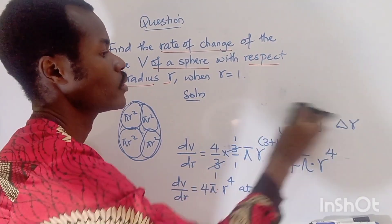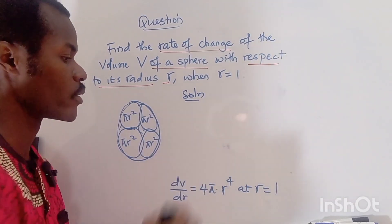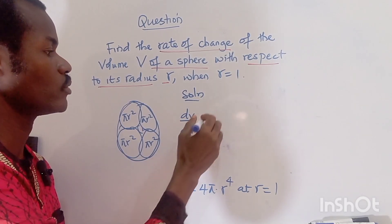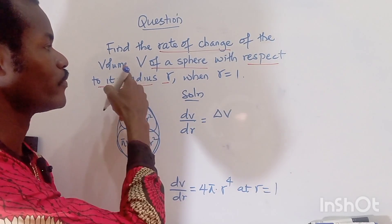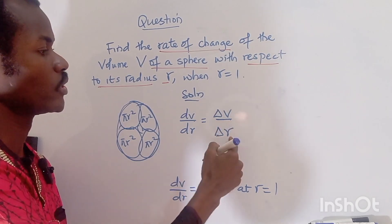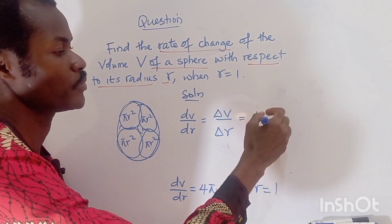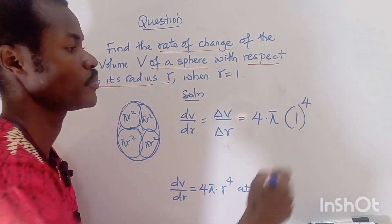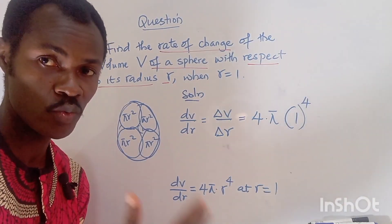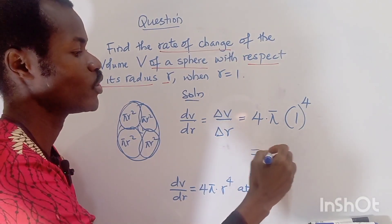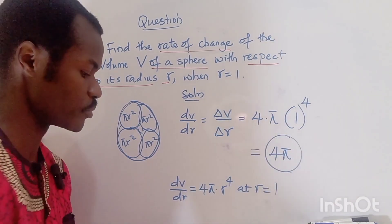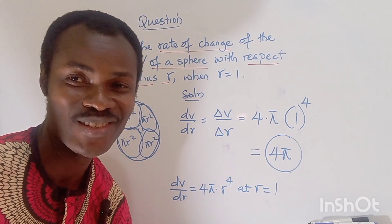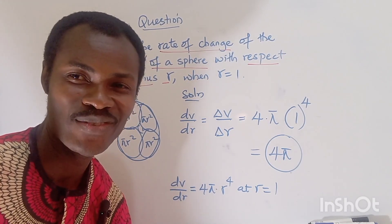We substitute r = 1 into the expression: dV/dr = 4π × (1)⁴ = 4π × 1 = 4π. So the answer to this question is 4π. Thank you guys for watching, hit the like button, share the video, and I'll see you in the next video — take care, bye!